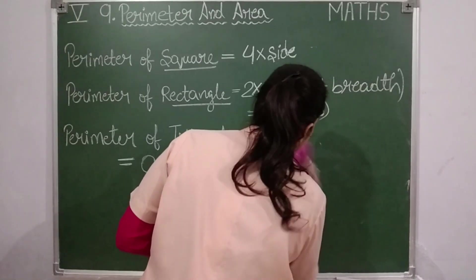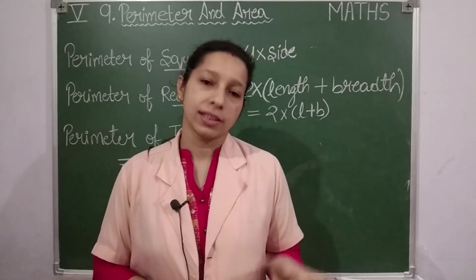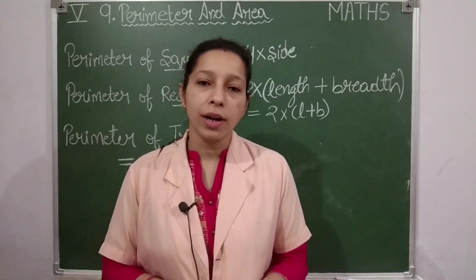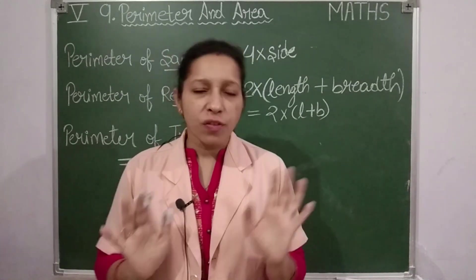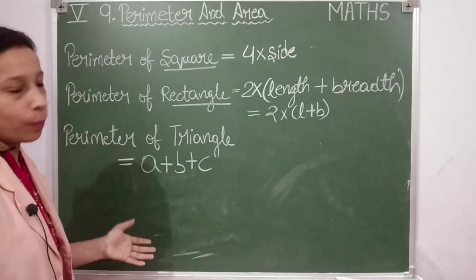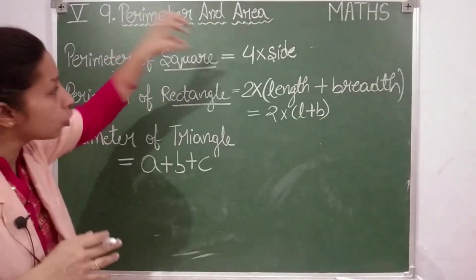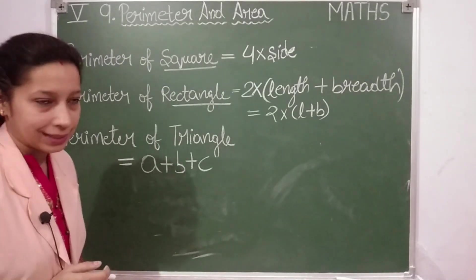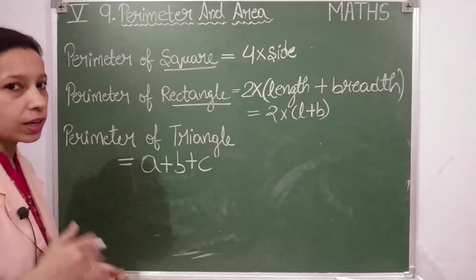But in case the triangle is an equilateral triangle — where all three sides are of the same length — you can take one side and multiply it by three. For now, this much information is enough. You should know how the formula is formed, and then it will be very easy to learn and apply it. Write it down in your notebook and then we will continue.